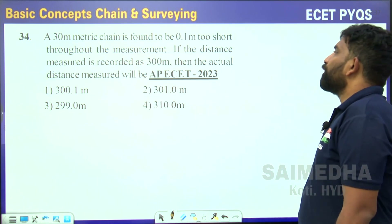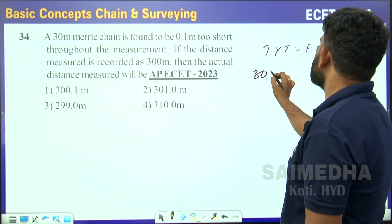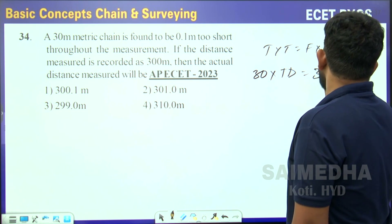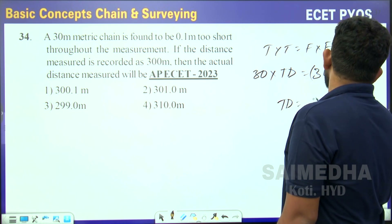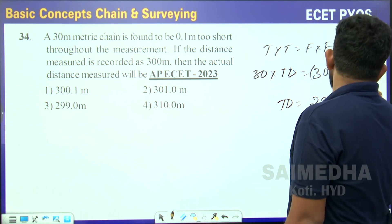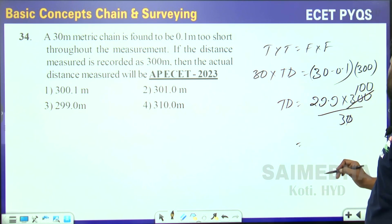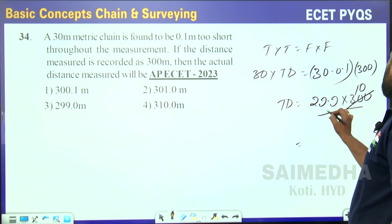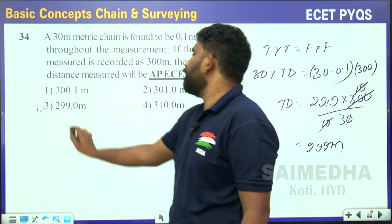A 30-meter tape is found to be 0.1 meter too short. Using true × true = false × false: one true length is 30 m, false length of chain = 30 − 0.1 = 29.9 m, false distance measured = 300 m. True distance = 29.9 × 300 ÷ 30 = 29.9 × 10 = 299 meters.